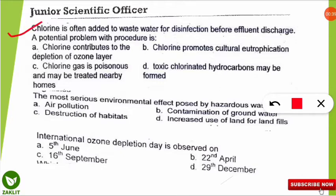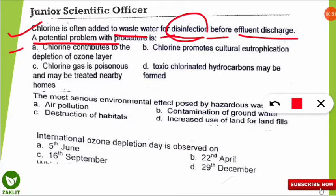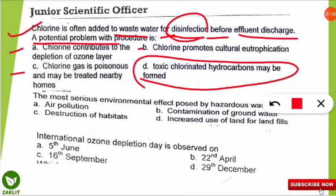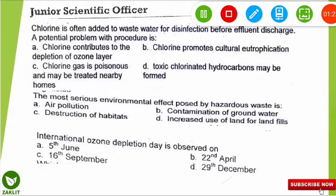The first question: chlorine is often added to wastewater for disinfection before effluent discharge. The potential problem with this procedure is what? The problem with chlorine addition in the disinfection of effluent discharge is that it forms toxic chlorinated hydrocarbons. The example is the very harmful trihalomethane. Trihalomethane is the toxic chlorinated hydrocarbon which is formed when chlorine is added to water for disinfection.